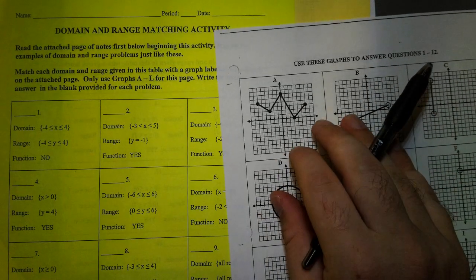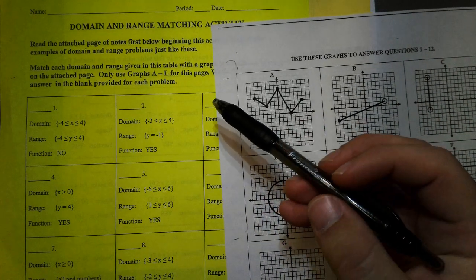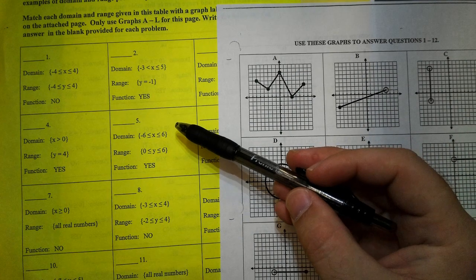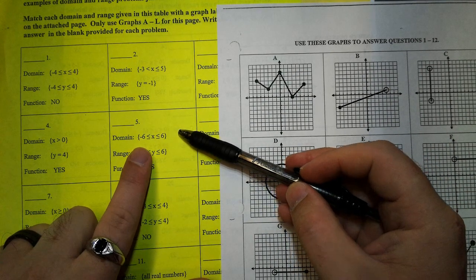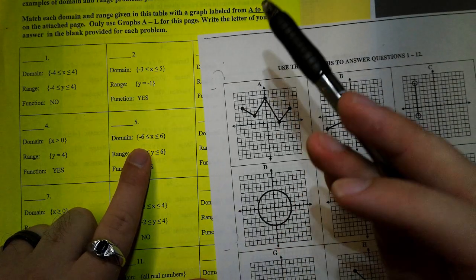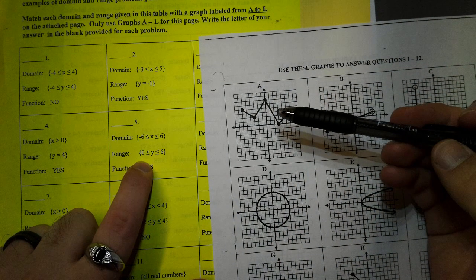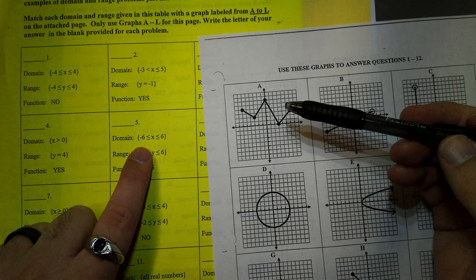So I need to look at my domains and find one that's negative 6 to positive 6. This one looks like a good candidate. So we've matched up our domain and now we're going to go find the range. It says this range should be 0 to 6.